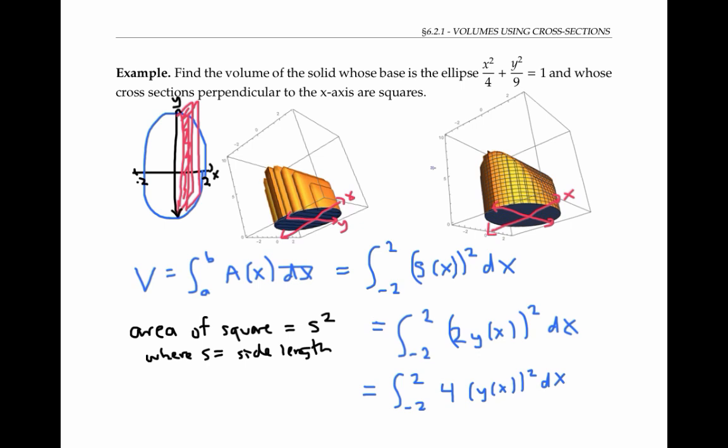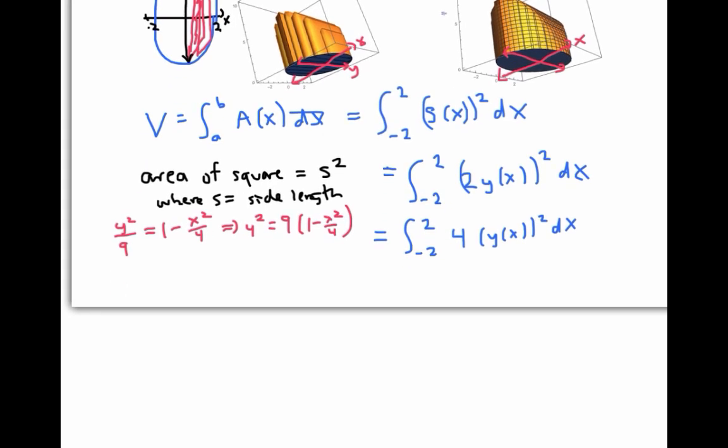Now all I need to do is find a formula for y as a function of x. And since I've got this equation up here relating y and x, all I have to do is solve for y in terms of x. In fact, I can get by solving for y squared, since I've really got y squared in my formula. Solving for y squared, I have y²/9 equals 1 minus x²/4, which means that y² equals 9 times (1 - x²/4). Now I'll plug this into my volume equation, and I get the integral from -2 to 2 of 4 times 9(1 - x²/4) dx.